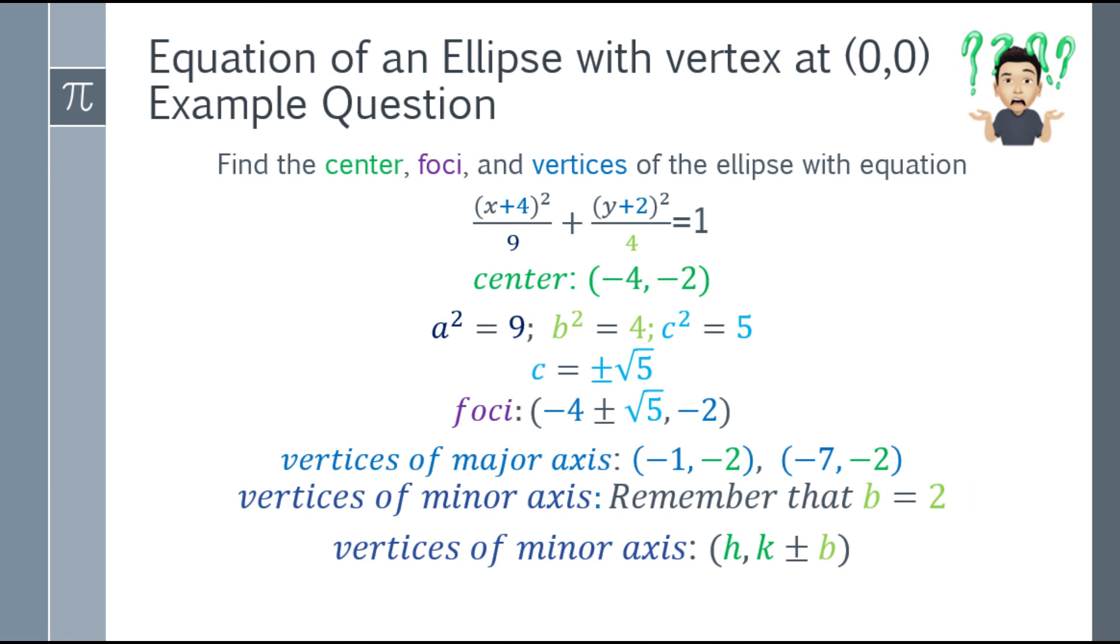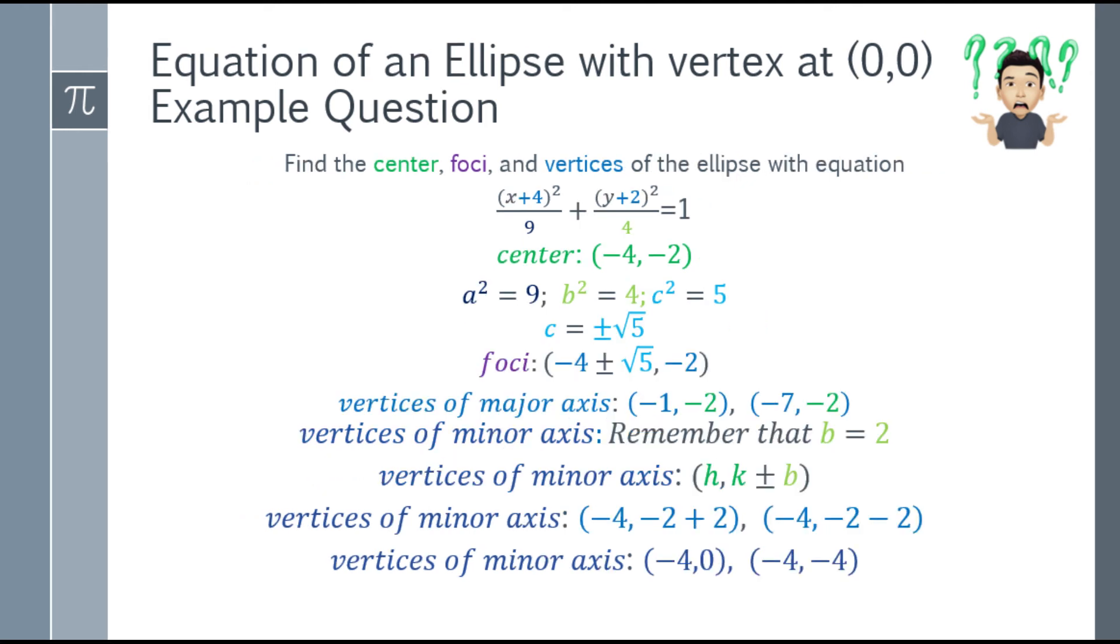Alright, so last one. We just have to find the vertices of the minor axis. Remember that b equals 2, because b squared equals 4, right? So b equals 2. To find the vertices of the minor axis, we have h, comma k, plus minus b. So b is always for the minor axis. Major axis will be for a. So that will be negative 4, comma negative 2 plus 2. And the other vertex of the minor axis will be negative 4, comma negative 2 minus 2. Simplify that, that will be negative 4, 0. And the other one will be negative 4 and negative 4.